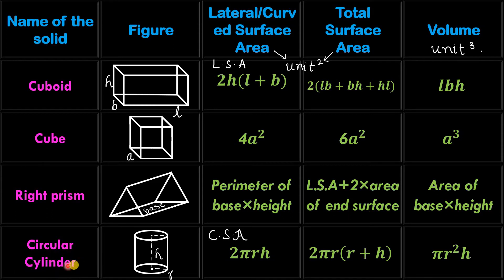This is circular cylinder. This is a curved shape, so here we will consider CSA. CSA means curved surface area. That is 2 pi RH. Its total surface area is 2 pi R of R plus H. Its volume pi R square H.